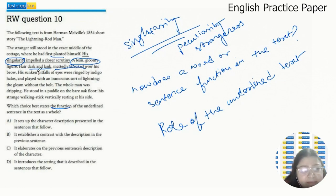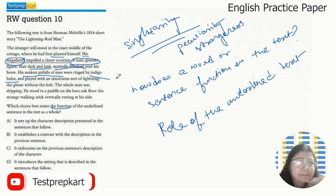His sunken pitfalls of eyes were ringed by indigo halos. So he had blue circles around his eyes. Dark blue circles denote sleeplessness. If you don't sleep for a few nights, you get black rings or dark blue rings around your eyes. He had that and his eyes were sunken, deep set and hollow.